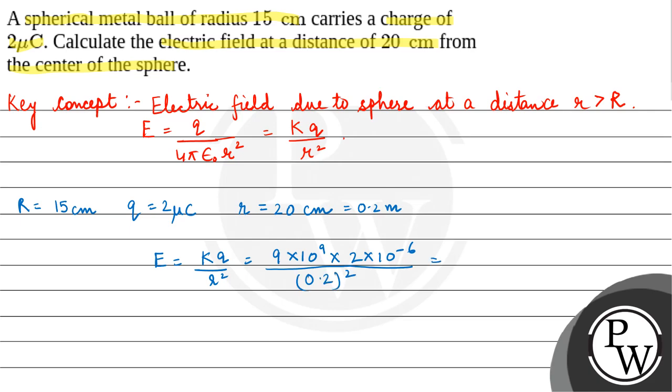So this equals 4.5 × 10⁵ Newton per coulomb.